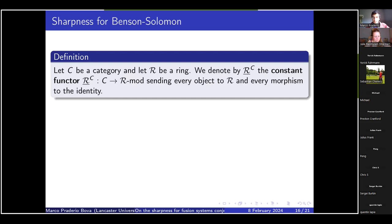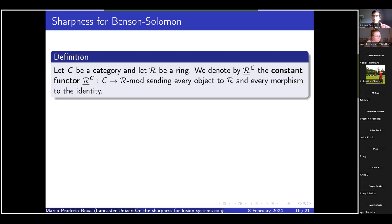In the last portion of the talk, I will go over how I exactly proved this — a sketch of the proof that sharpness holds for Macki functors over the Benson-Solomon fusion systems. First, the higher limits can be seen as certain Ext groups. Given a category C and a ring R, we can define RC as the constant functor from C to the category of R-modules that sends every object in C to the trivial R-module R and every morphism to the identity.